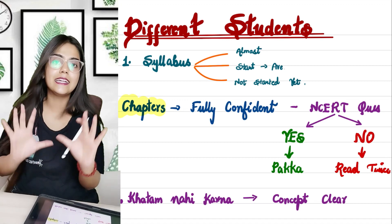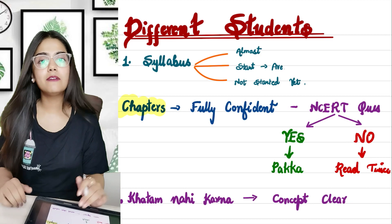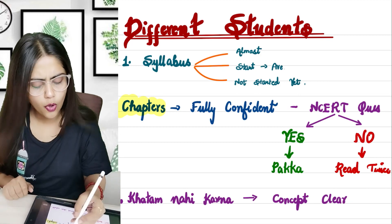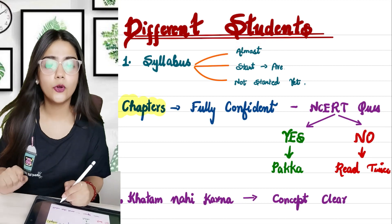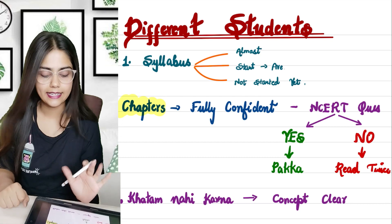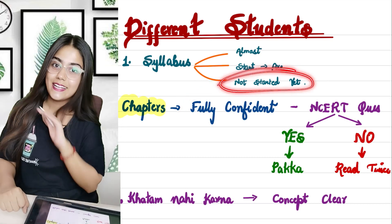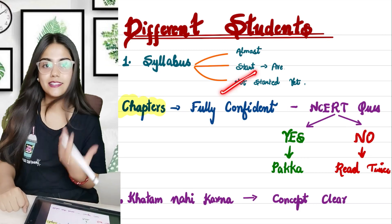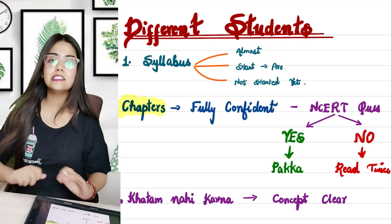Generally, there are 3 categories of students. Category 1: those who have almost completed their syllabus. Category 2: those who have started studying but have not covered all chapters. Category 3: those who have not started anything — they will start only when school reopens.